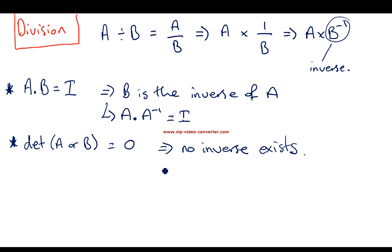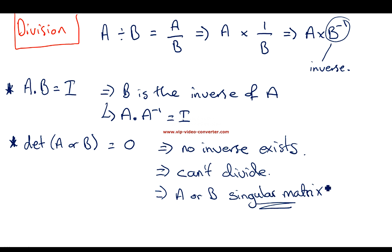If there's no inverse exists, then that ultimately implies that we can't divide. Because we know in general terms, we can't divide by 0. So we can't divide, and ultimately it means one of the matrices, whichever one has the determinant equal to 0, A or B, is going to be a singular matrix. A matrix that is singular has its determinant equal to 0.